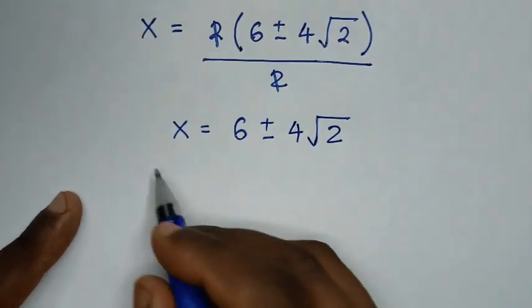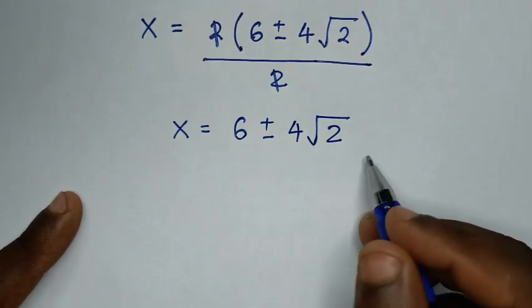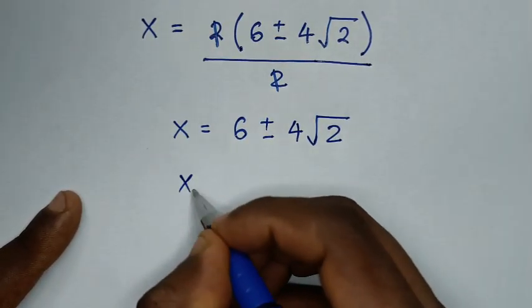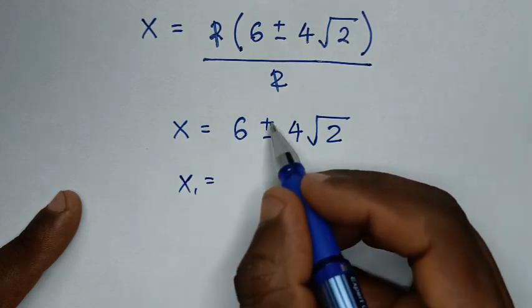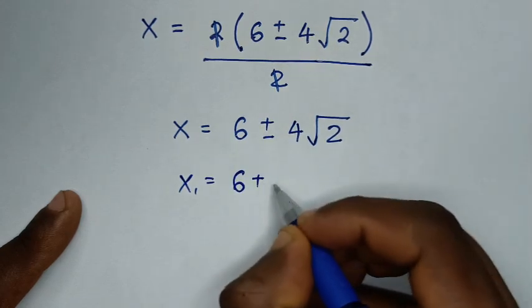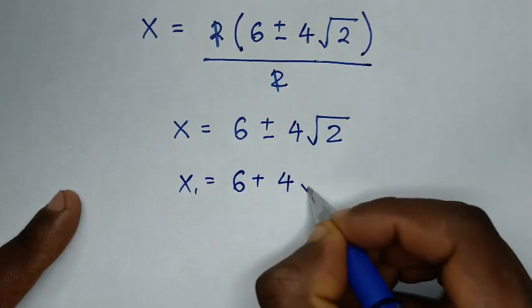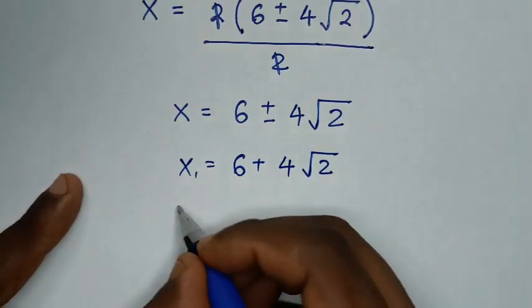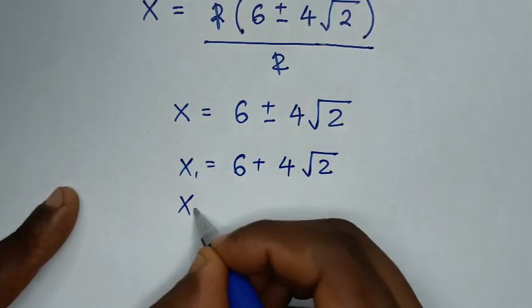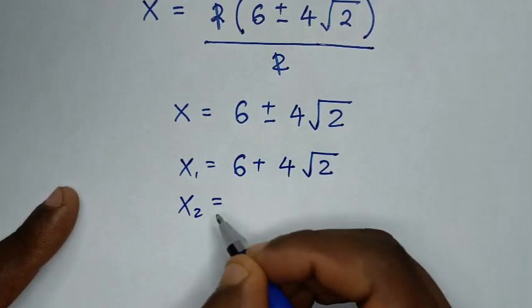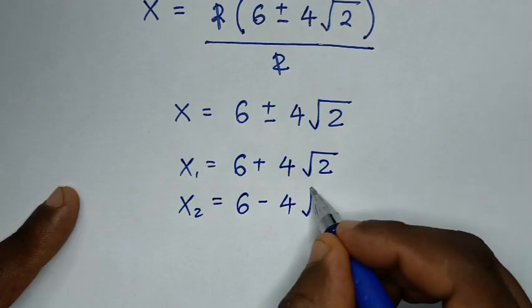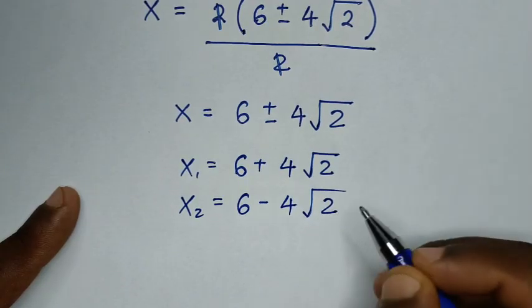We have two candidate values of x: x₁ = 6 + 4√2 (taking the positive sign) and x₂ = 6 − 4√2 (taking the negative sign).